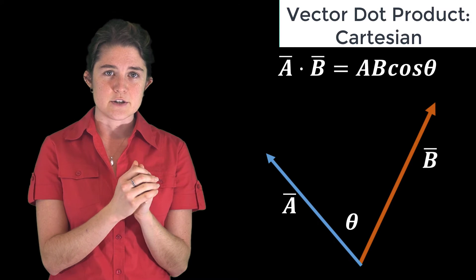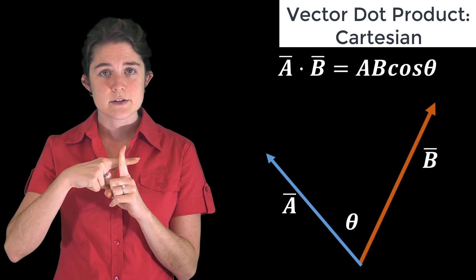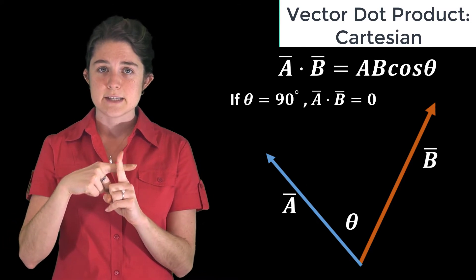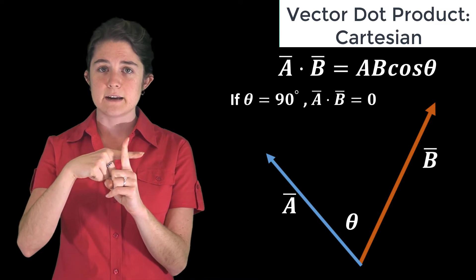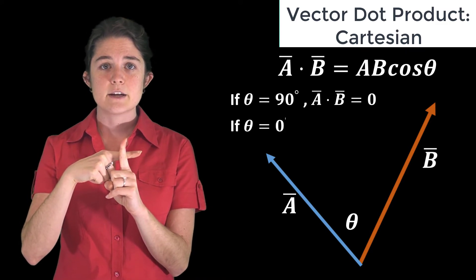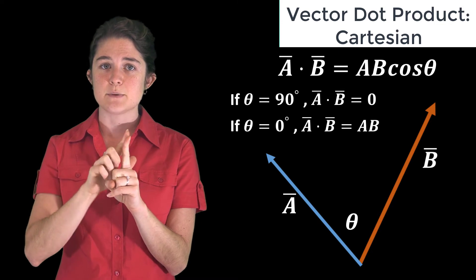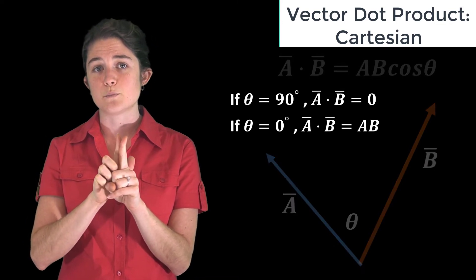From this representation, we can clearly see that two orthogonal vectors will always have a dot product of zero, because the cosine of theta in this case is zero. The dot product of two vectors is maximized when the vectors are parallel, because in this case the cosine of theta is one.